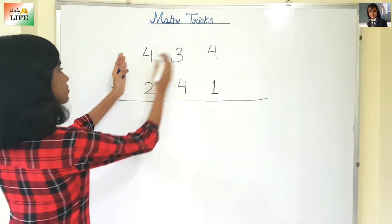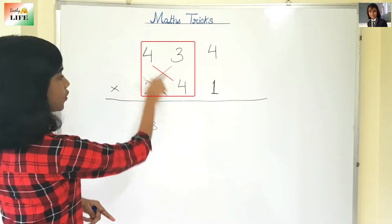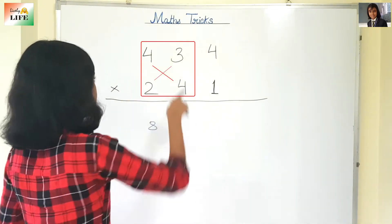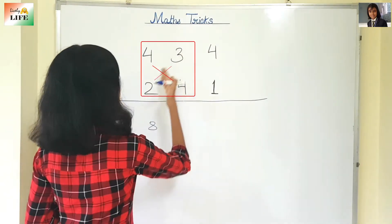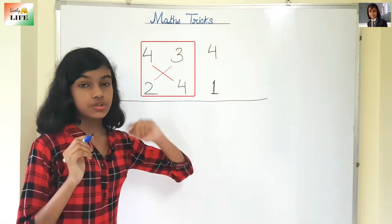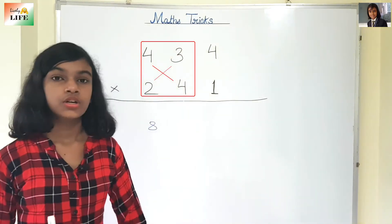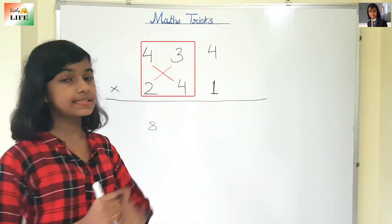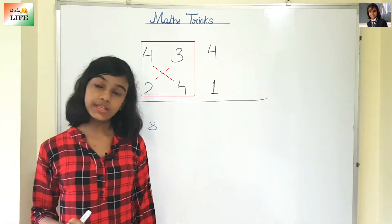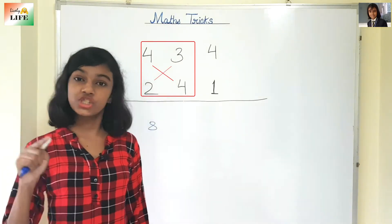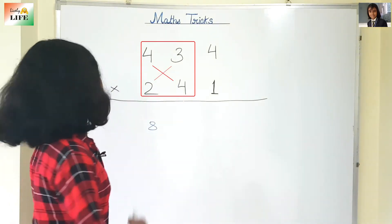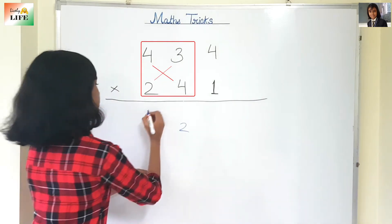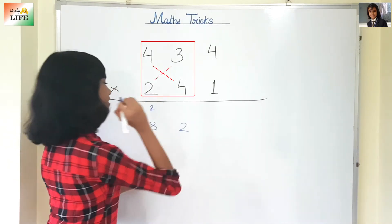Then move to the second block: 4×4 is 16, and 3×2 is 6. So 16 plus 6 is 22. We are going to write 2 here and carry 2.